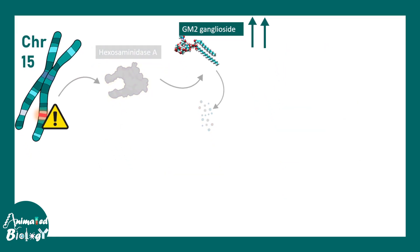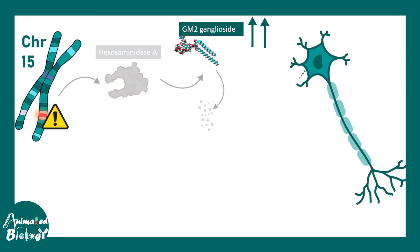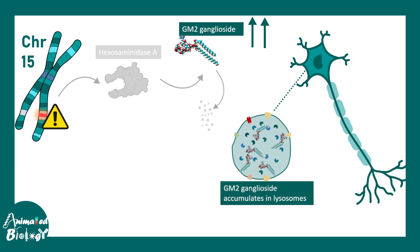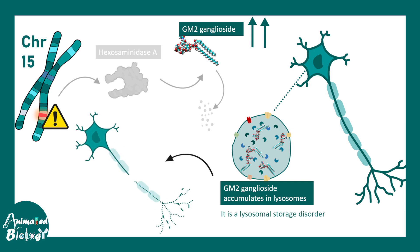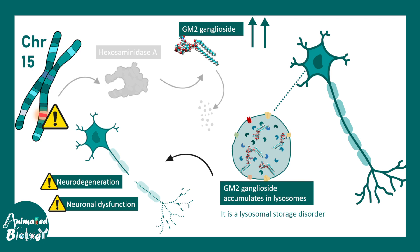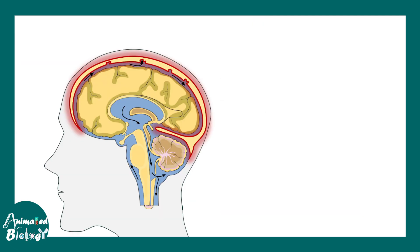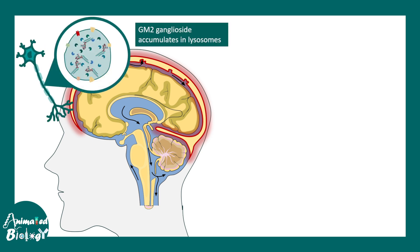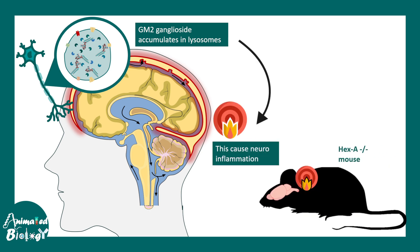Why is GM2 ganglioside accumulation in the neuron actually harmful? GM2 ganglioside accumulates in the lysosome, and it has been seen that this leads to progressive neurodegeneration. Neuronal dysfunction is also pretty prominent in patients with Tay-Sachs disease. These excess gangliosides can lead to neuroinflammation, at least as shown in animal models where hex A is mutated.